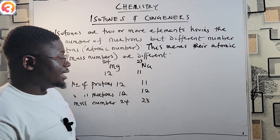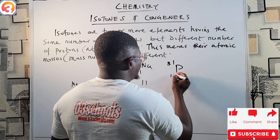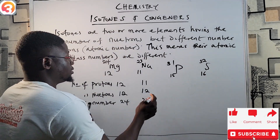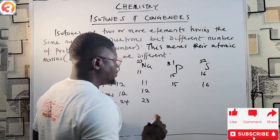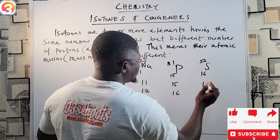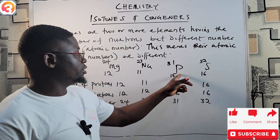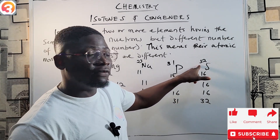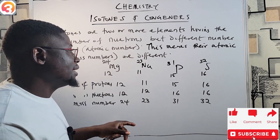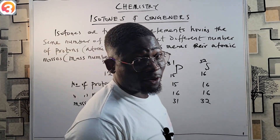Here is another example. Phosphorus P-31 (atomic number 15) and sulfur S-32 (atomic number 16). Number of protons: 15 and 16 — they are different. Number of neutrons: for phosphorus, 31 minus 15 = 16; for sulfur, 32 minus 16 = 16. The mass numbers are 31 and 32 — different. So the neutron counts are the same but the atomic numbers are different, making these classic examples of isotones.